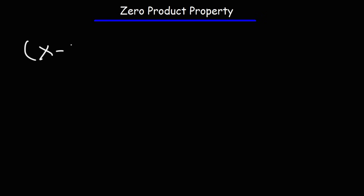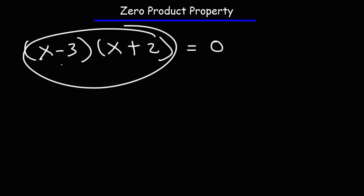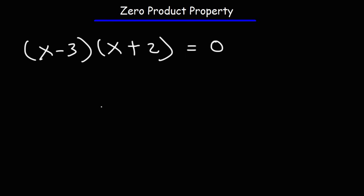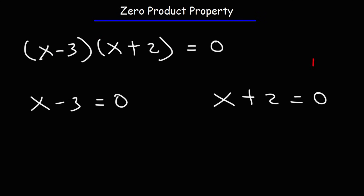This property is very useful when solving quadratic equations. Typically when you factor a trinomial, you might get something like (x minus 3)(x plus 2) equals zero, and you need to solve for X. Using the zero product property, if either (x minus 3) or (x plus 2) equals zero, the entire expression will equal zero. So we can break this single equation into two parts: set x minus 3 equal to zero, and set x plus 2 equal to zero, because if just one of those two factors equals zero, the whole thing is zero.